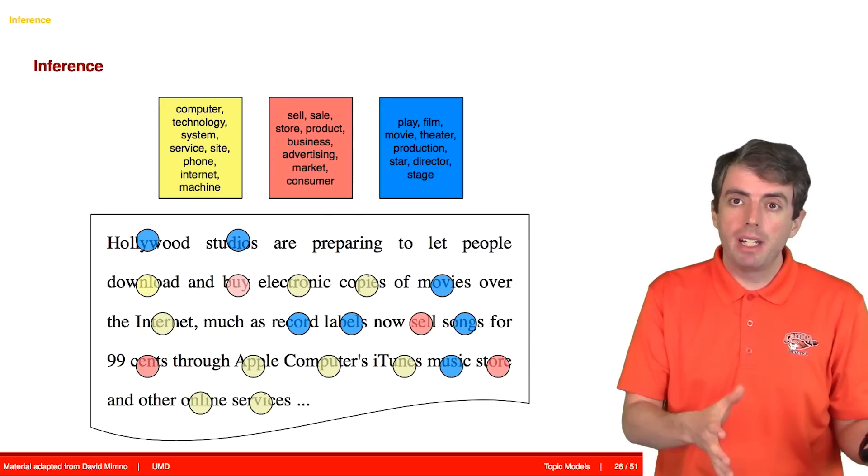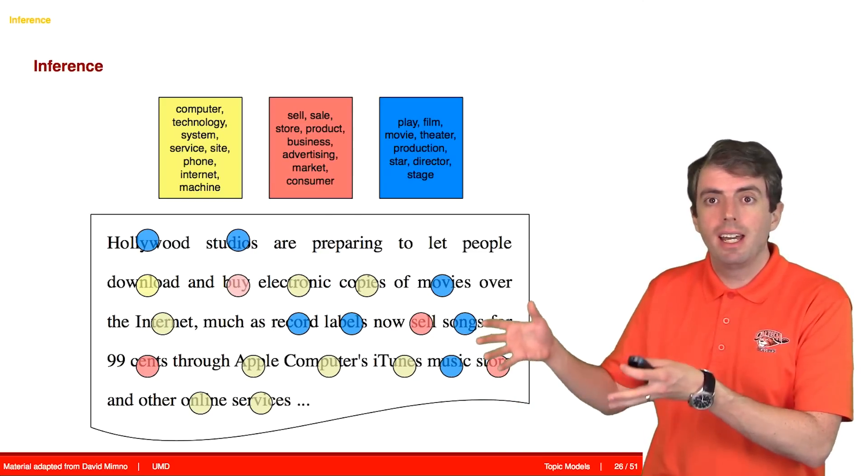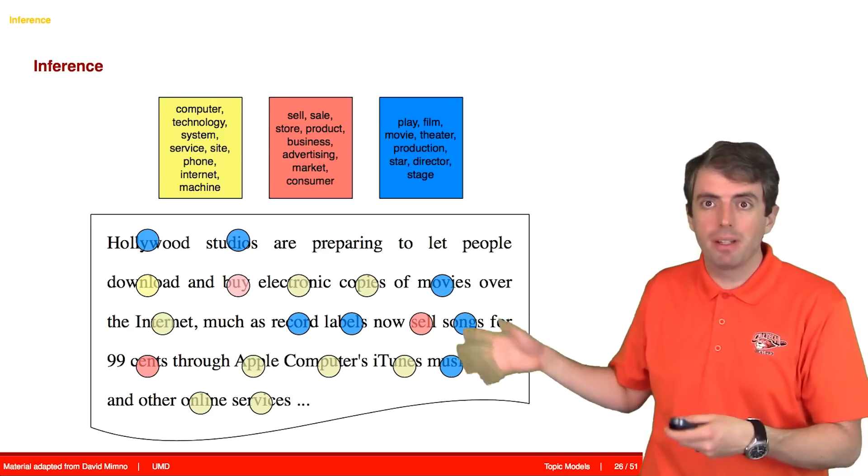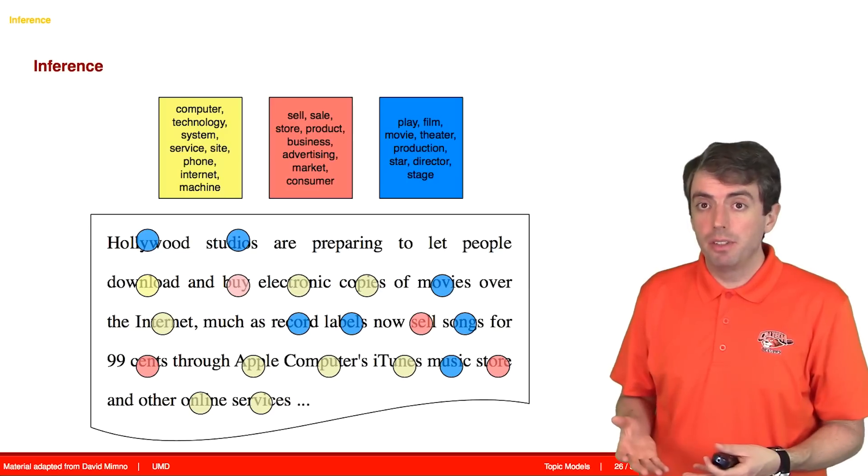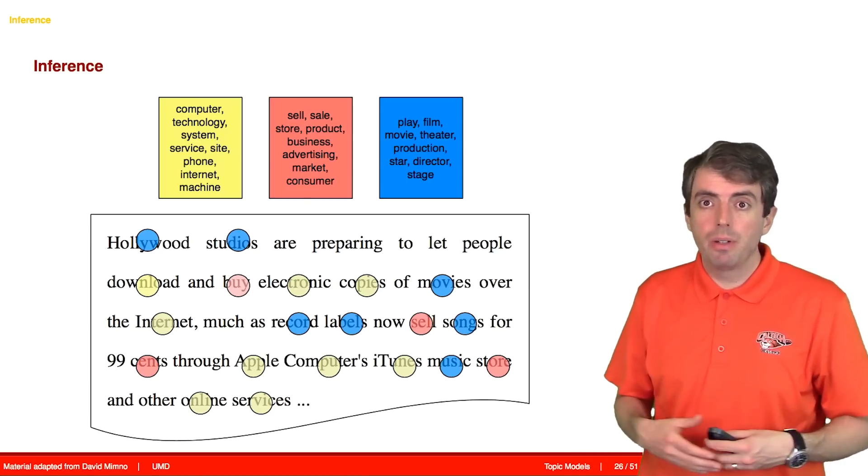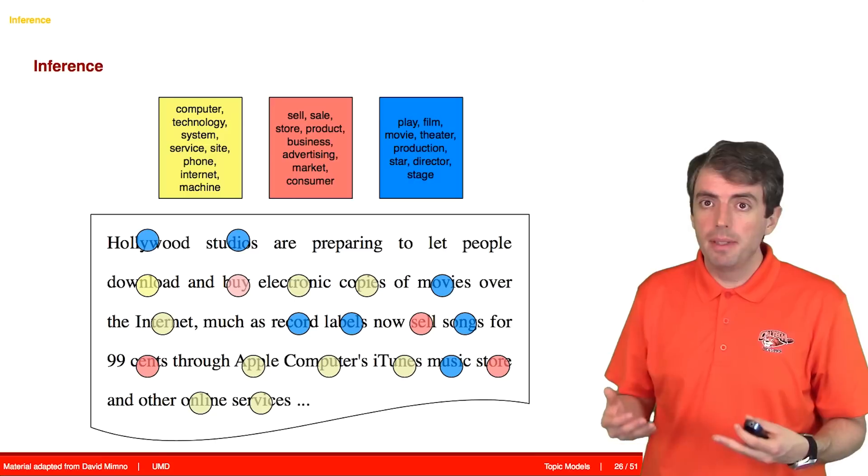How you would go from data to an actual set of topics that describe what's going on in that dataset. There are several ways of doing this. Right now we're going to focus on an approach called Gibbs sampling.